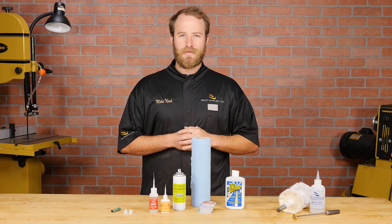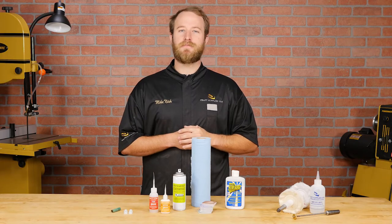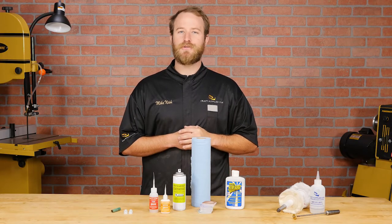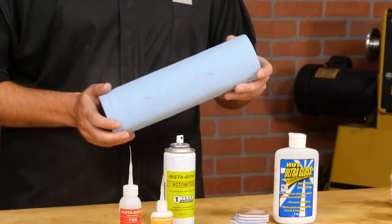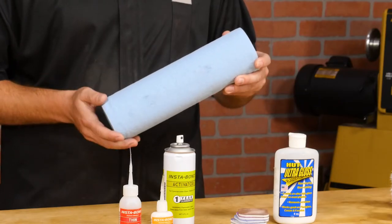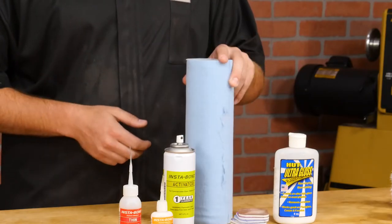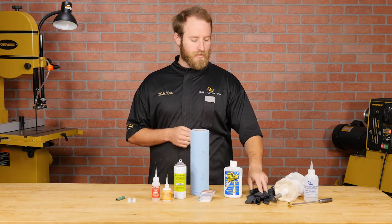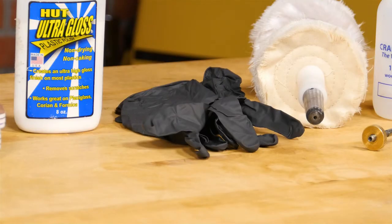When selecting a paper towel for a CA finish, some of the cheaper ones leave fibers behind and cure the CA too quickly, so I recommend using the blue shop towels that can be found in most auto stores. Gloves are also highly recommended throughout this process and I'll be using the black nitrile gloves.